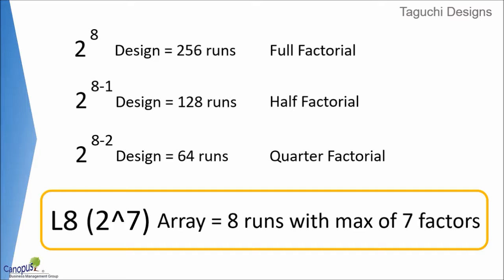If you come to a quarter factorial experiment, then we are talking about two to the power six, which equals 64 runs or 64 experiments.